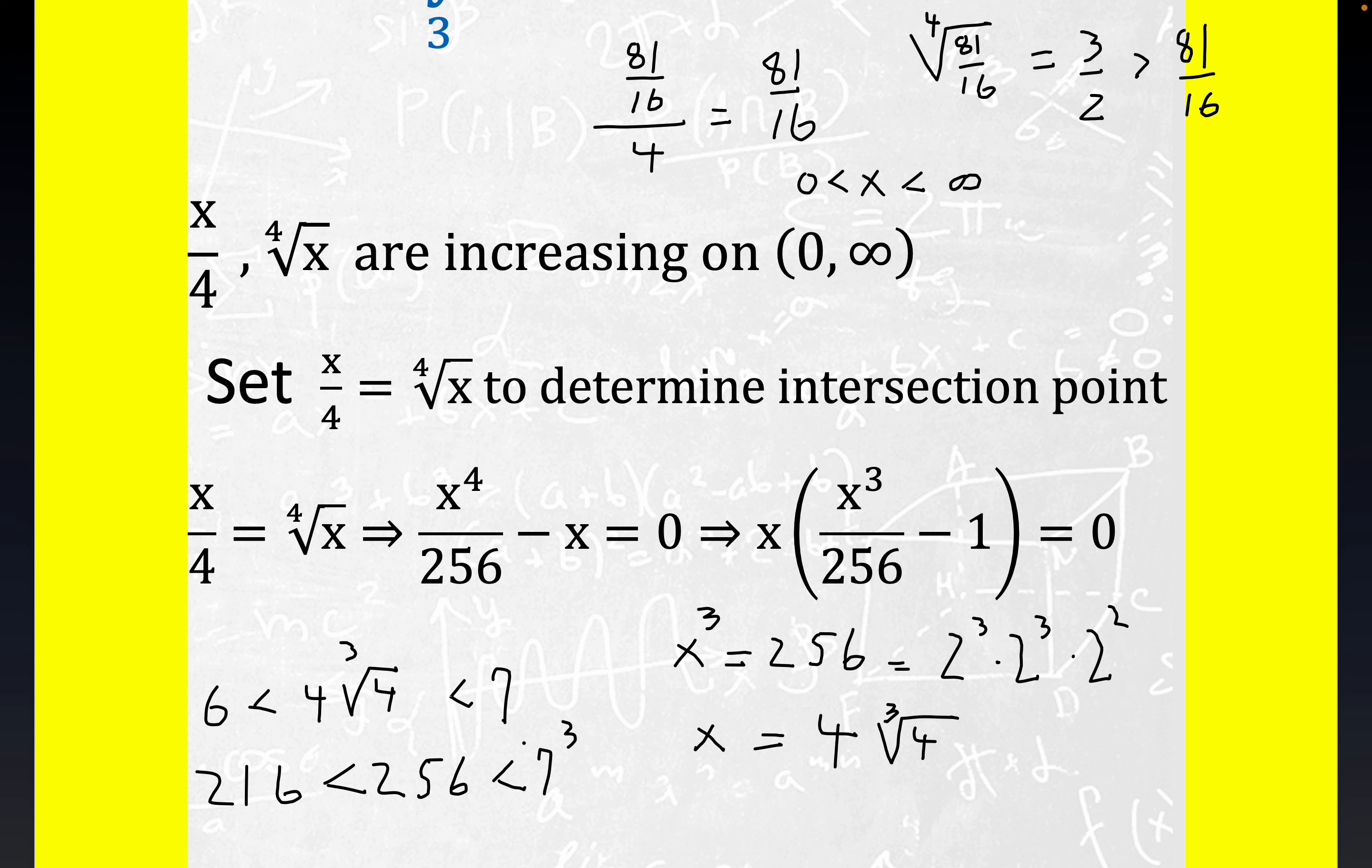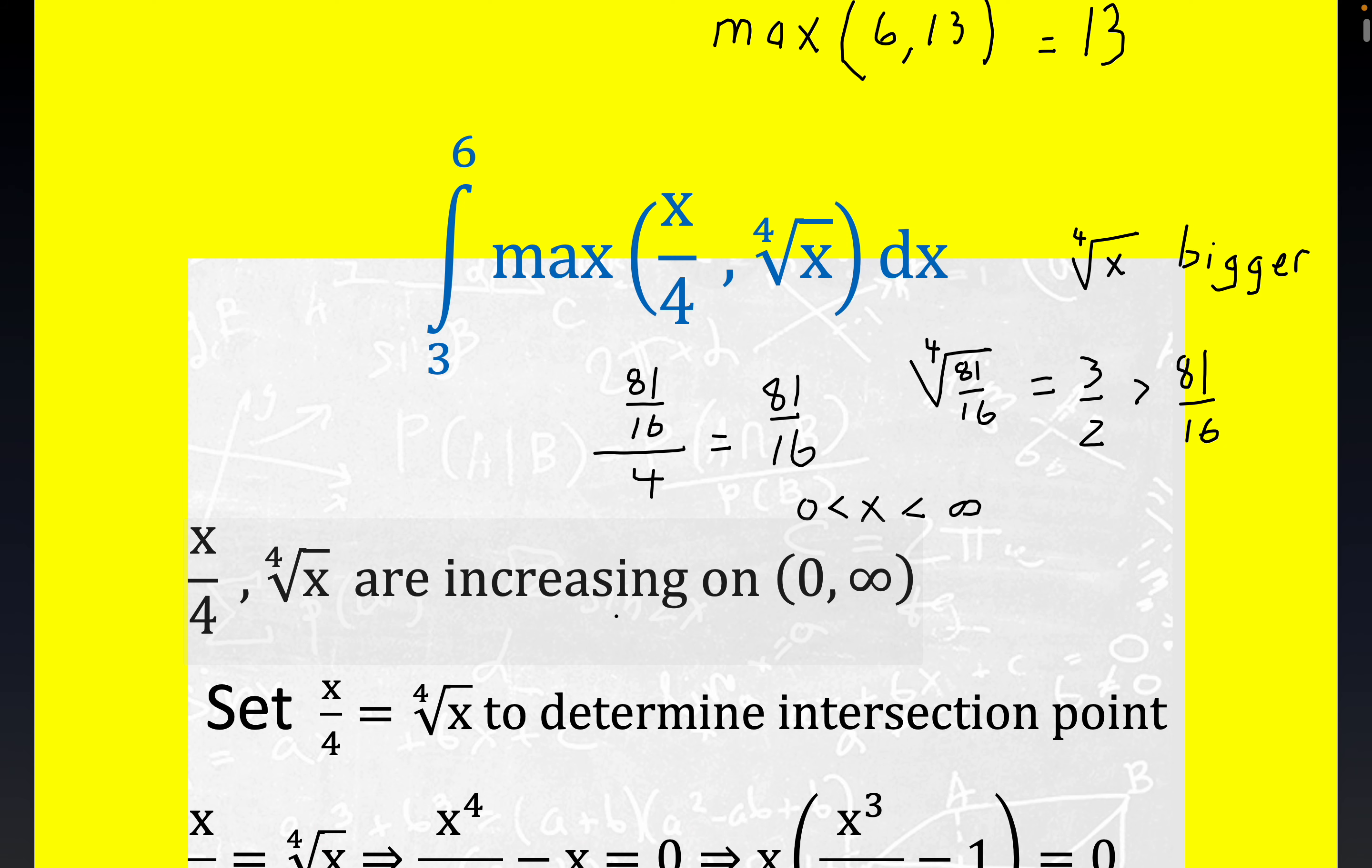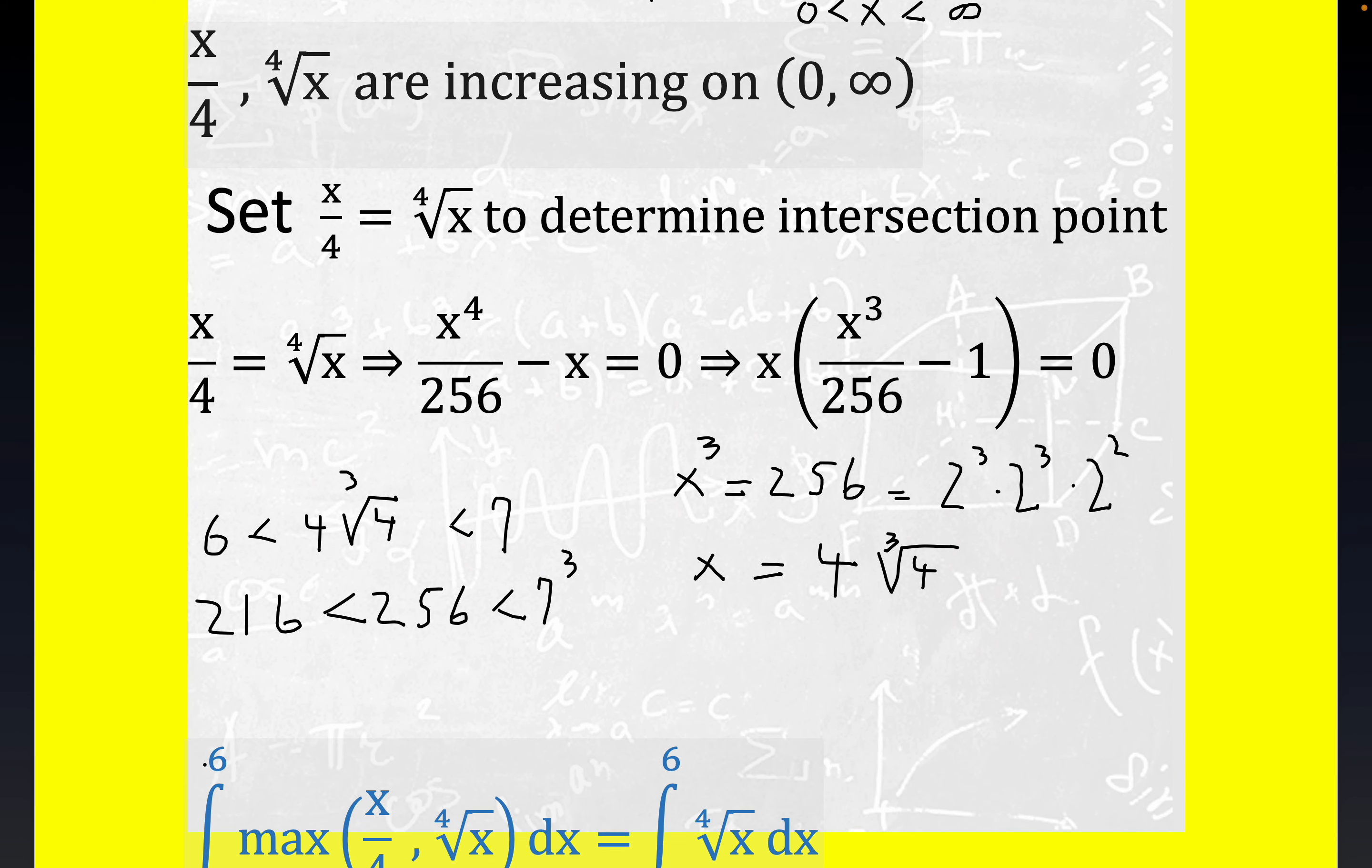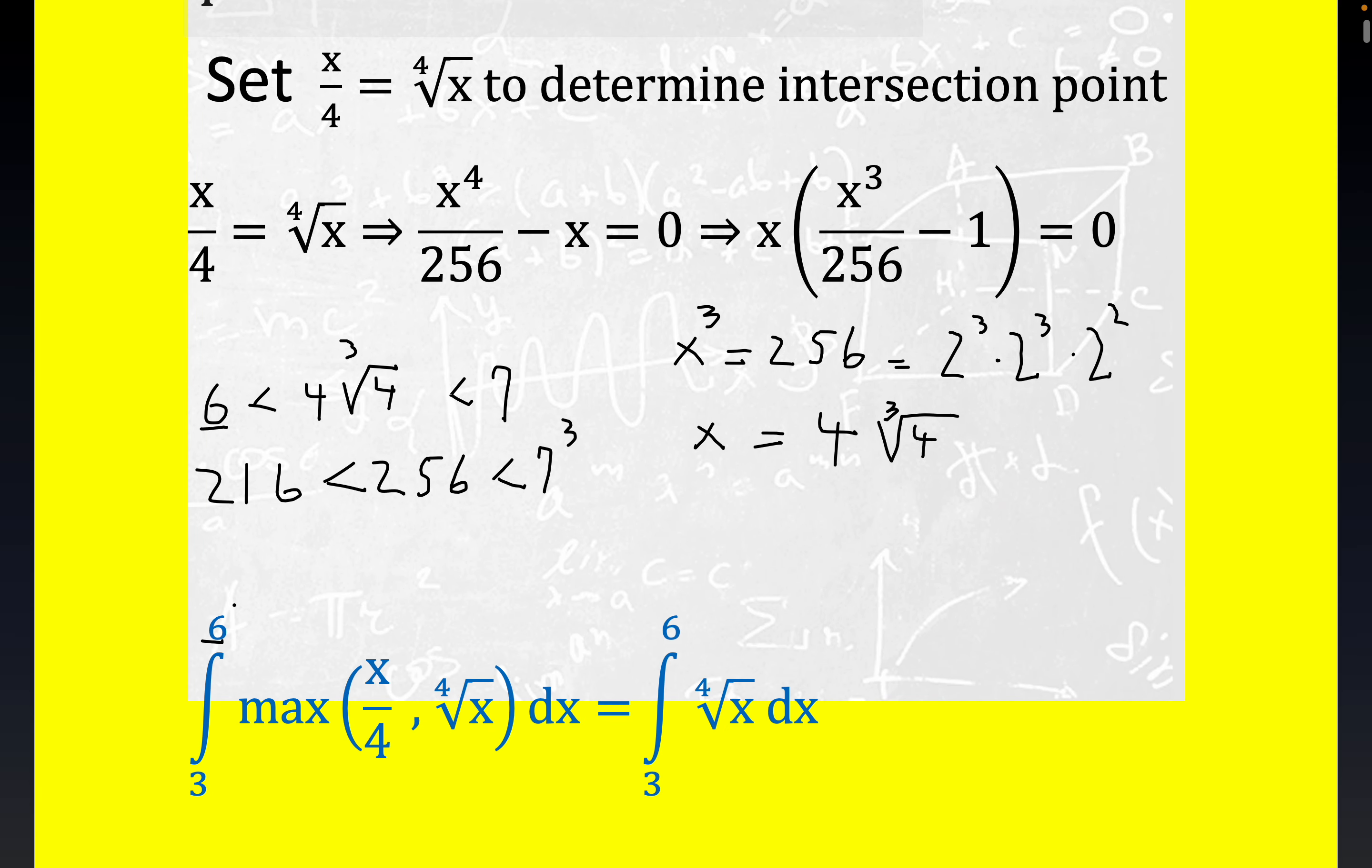That tells us that the fourth root function is going to stay on top in this entire interval. Because it was on top for a value between 1 and 2, both functions are increasing, and they don't intersect until this value that's past the upper limit of integration. Notice this 6 here—we're not switching the behavior because we're between 3 and 6, and the intersection point is greater than 6. That means we will choose this function. Now if we had made this limit 7, we'd have to switch off at this point and split it apart into two definite integrals. This one is our max function—the max between these two numbers is the fourth root of x.